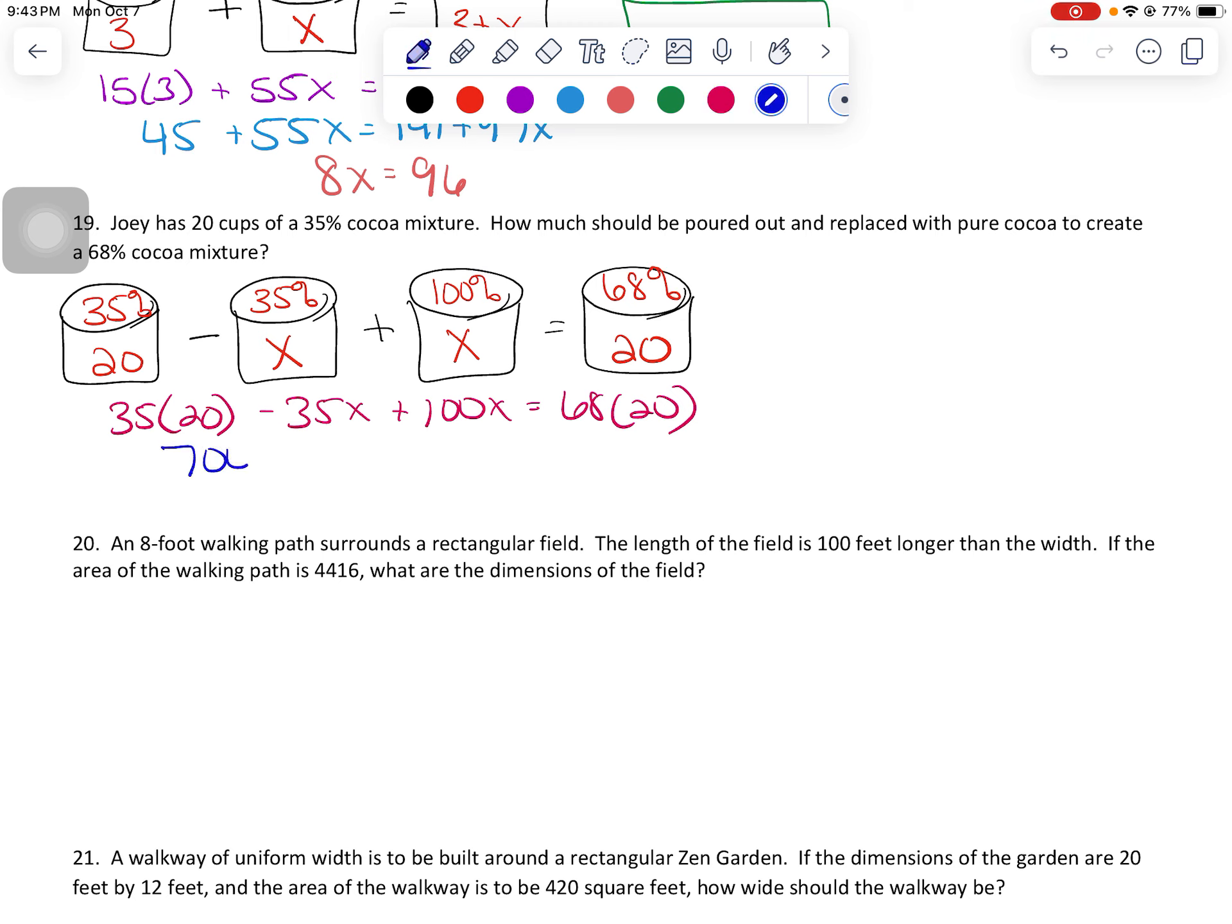So 700 minus, actually I'm going to go ahead and combine these two terms. So 100 minus 35, it's going to be positive 65x equals, let's see, 68 times 20, 1360. If I subtract 700 from that, that gets me 65x is equal to 660, dividing by 65,